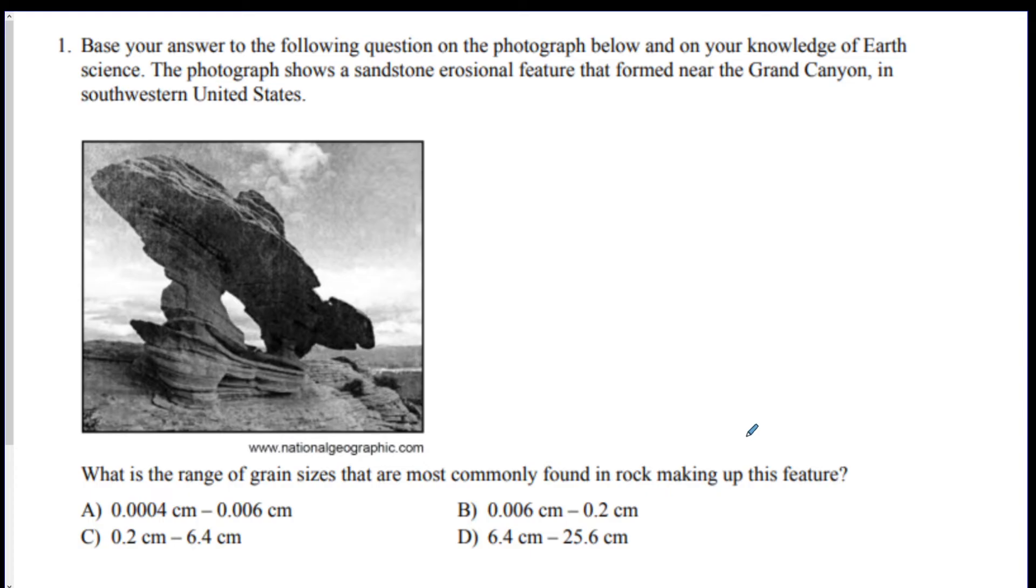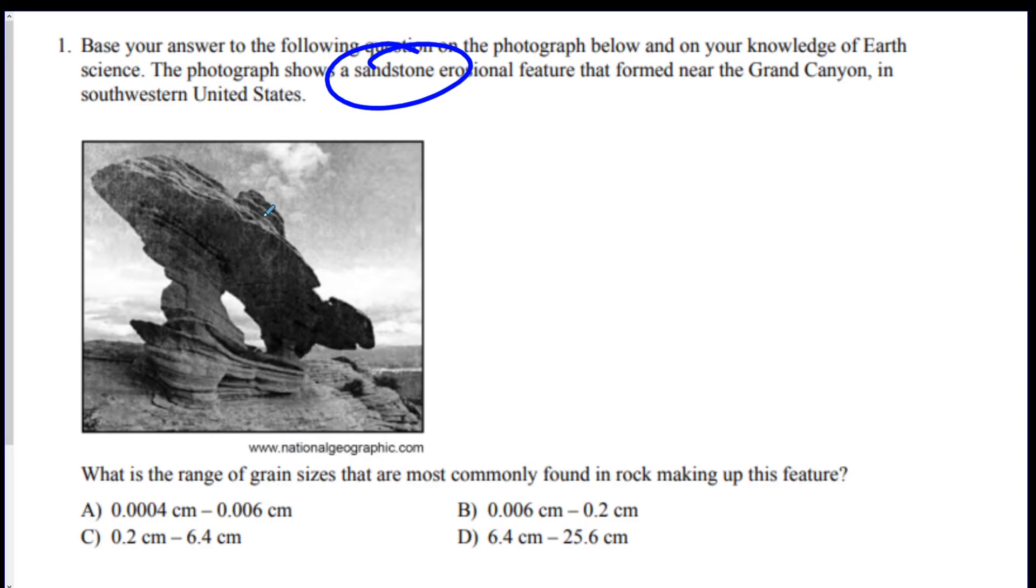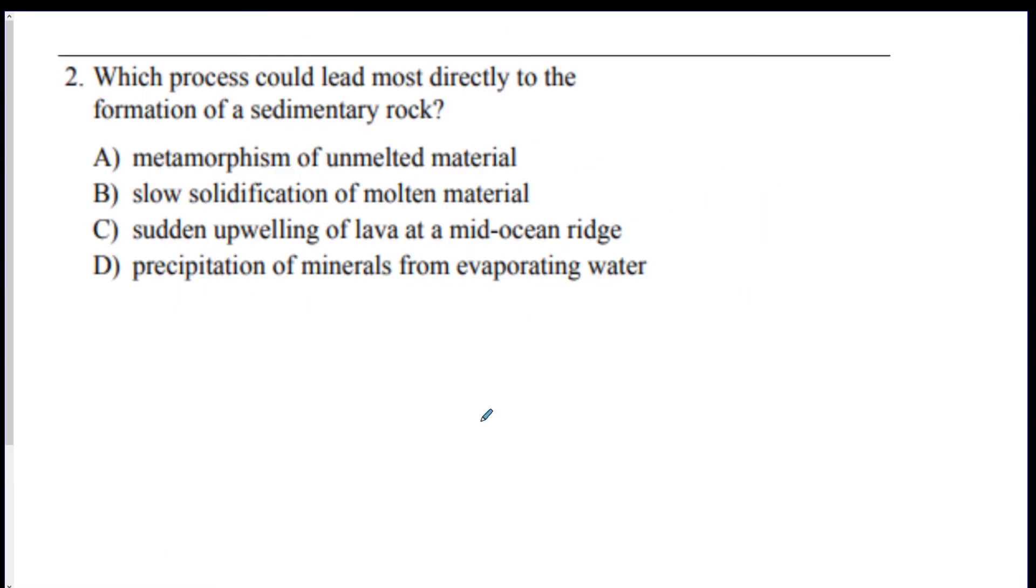So we're going to do some practice questions. So take out your reference table and see if you can get it. The photograph shows a sandstone erosional feature that formed near the Grand Canyon. What is the range of grain sizes that are most commonly found in this rock? Well, the key word here was you've got to know what rock they're talking about, and it's sandstone. So you've got to go on your reference table, find sandstone, which it's right here. It's going to be on one of those rock charts, and then look at its grain size. 0.006 to 0.2. The answer is B.